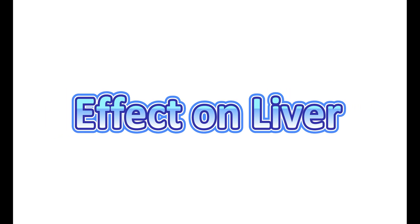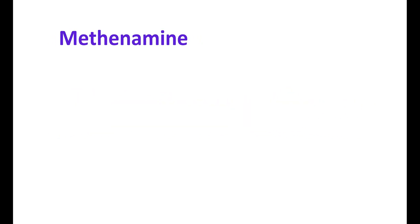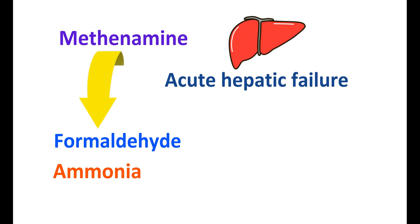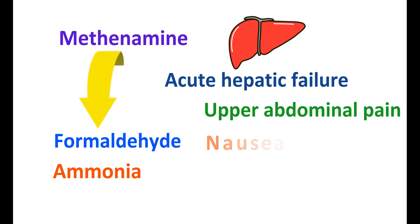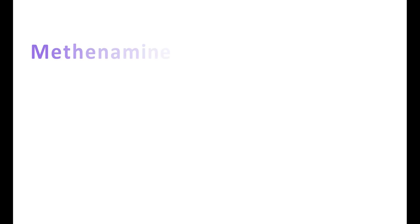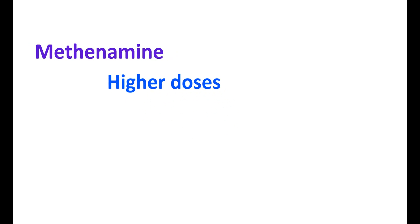Regarding methenamine's effect on the liver: methenamine is split into formaldehyde and ammonia. In normal people, the small amounts of formaldehyde and ammonia do not affect liver function, but in people with hepatic insufficiency they may develop symptoms of acute hepatic failure — including upper abdominal pain, nausea, vomiting, and jaundice. Additionally, at higher doses, methenamine can increase the amount of formaldehyde in the bladder, producing bladder irritation and painful or uncomfortable urination. Significant bladder effects are observed when methenamine is used at doses above 8 grams per day.